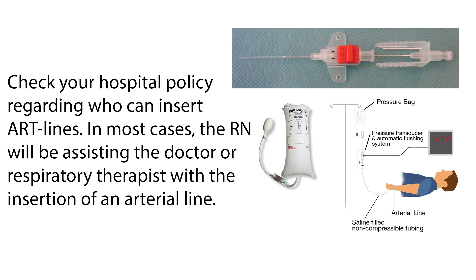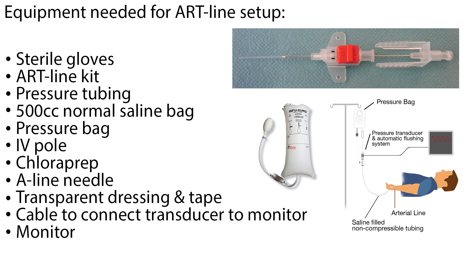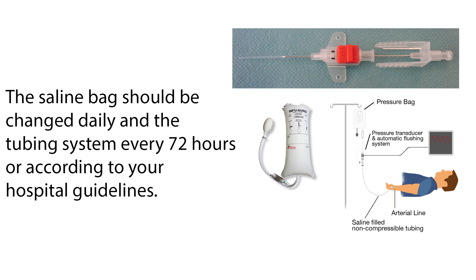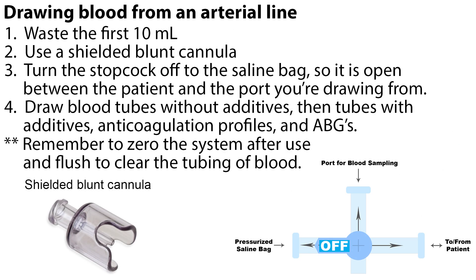Check your hospital policy regarding who can insert an art line. In most cases, the RN will be assisting the doctor or respiratory therapist with the insertion. The following equipment is needed: sterile gloves, an art line kit, pressure tubing, 500 cc of normal saline with air removed from the bag, a pressure bag, IV pole, chloroprep, a line needle, transparent dressing and tape, cable to connect the transducer, and the monitor. The saline bag should be changed daily and the tubing system every 72 hours, or according to your hospital guidelines.